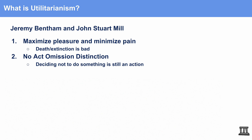No matter what you think, deciding not to do something is still considered an action. For example, if I refuse to hold my cup in the air, that's still an action because I'm carrying out the decision in my head — replaying different scenarios and deciding not to do something. So utilitarianism says that whether you do or do not an action, that's still an action, and you should always choose actions that maximize pleasure and minimize pain.